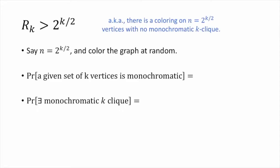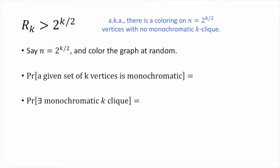Let's start by proving that rk is bigger than 2 to the k over 2. To prove this, we need to show that there is a coloring on n equal to 2 to the k over 2 vertices with no monochromatic k-clique. We're going to use the probabilistic method. Let n equal 2 to the k over 2, and let's imagine coloring the complete graph on n vertices at random — for every edge, flip a coin; heads means blue, tails means red. Then the probability that a given set of k vertices is monochromatic is equal to 1/2 to the k-choose-2 minus 1.